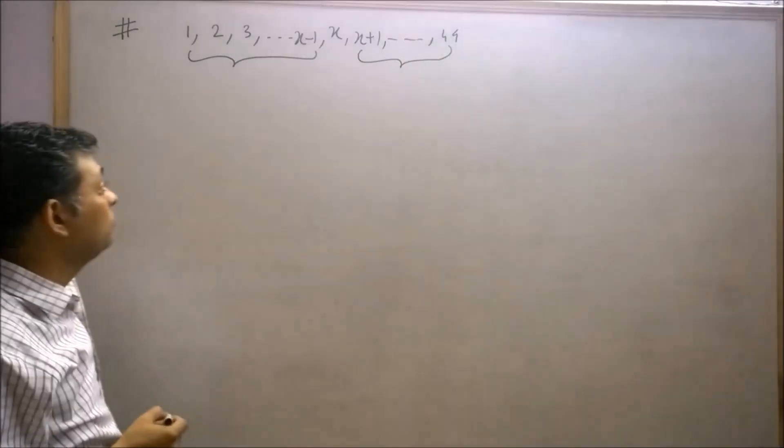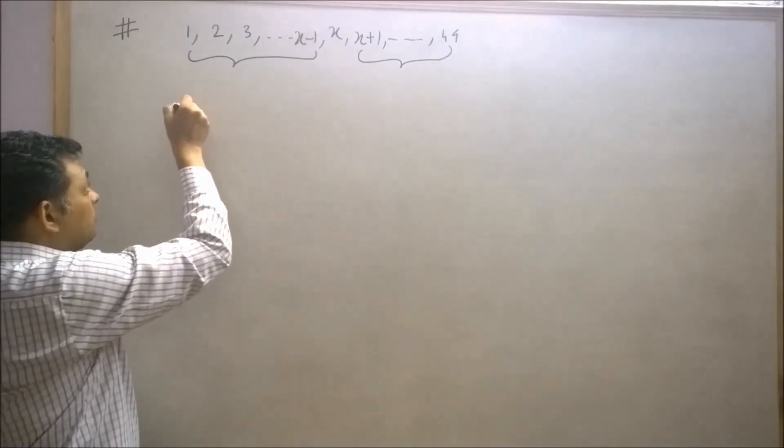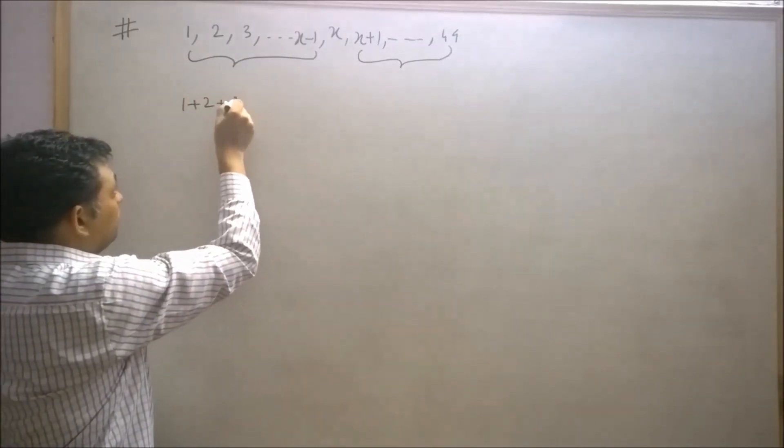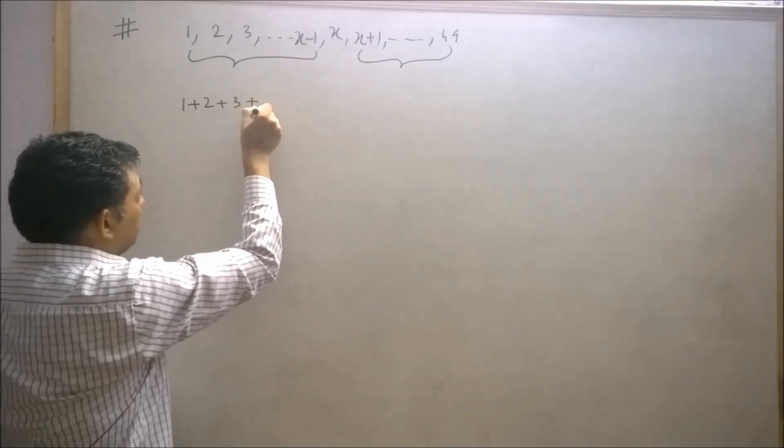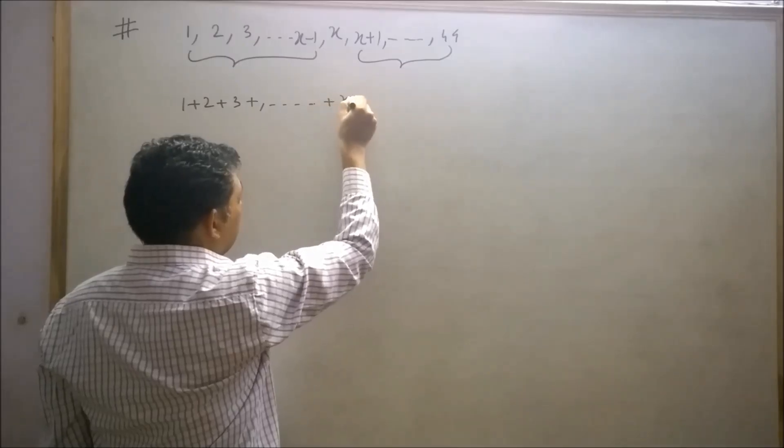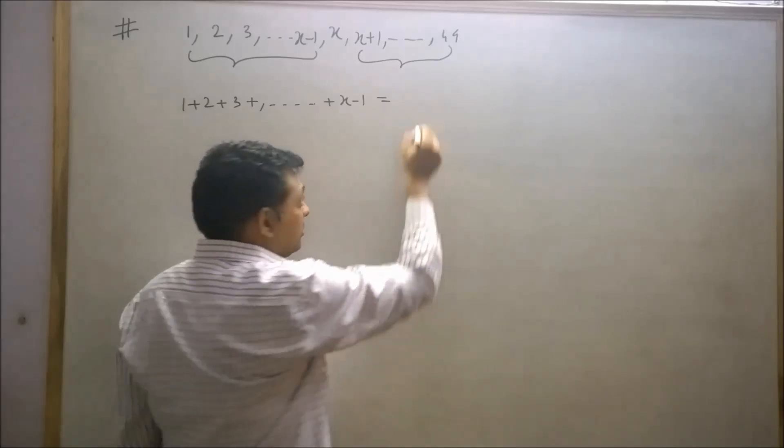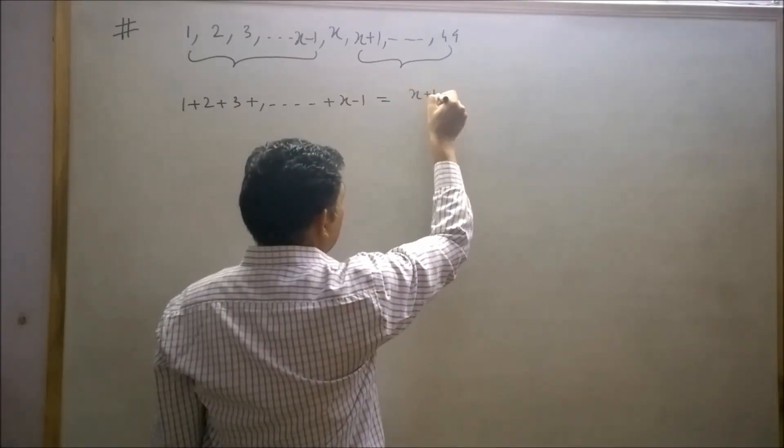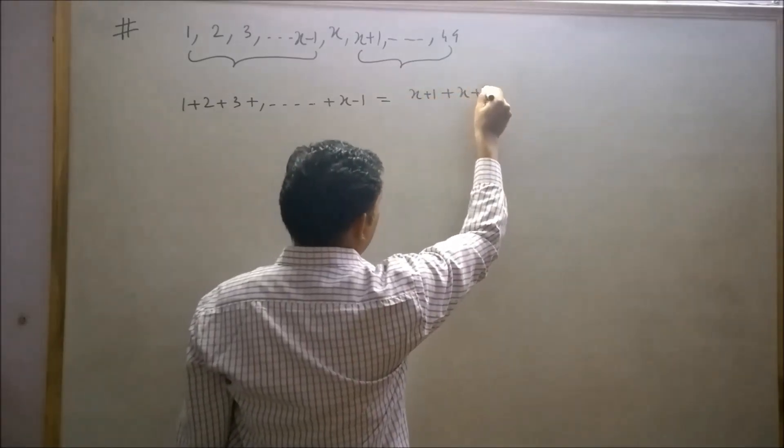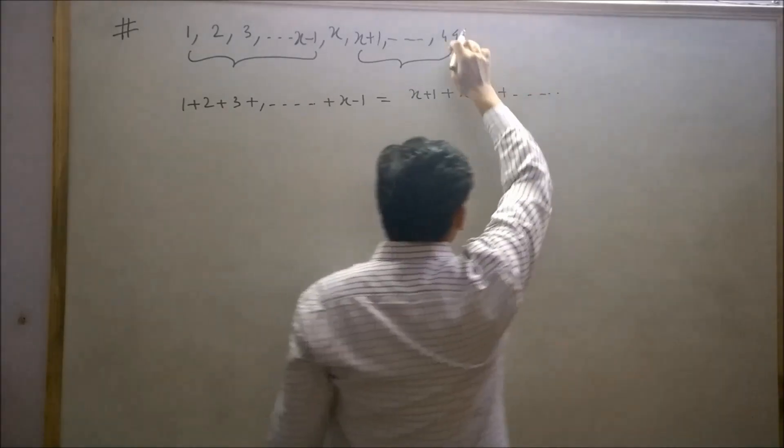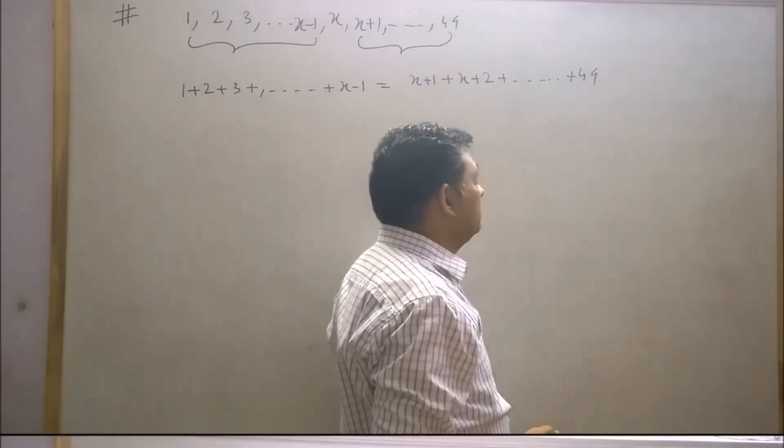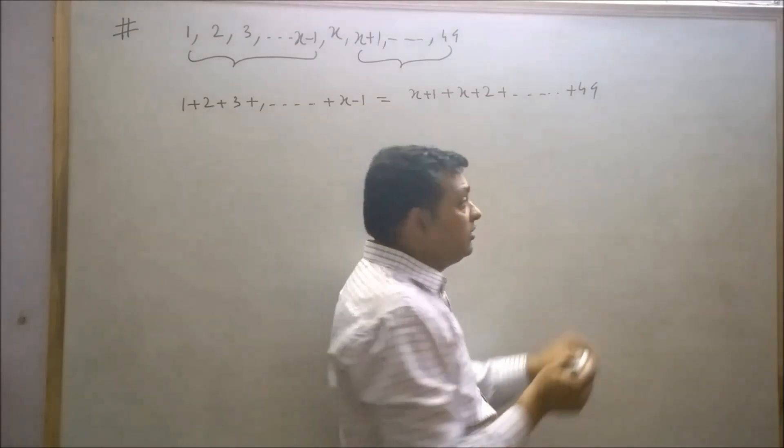And according to the question, the sum of these houses will equal the sum of the number of these houses. So we can say 1 + 2 + 3 + ... + (x-1) is equal to (x+1) + (x+2) + ... + 49. This is the given condition.